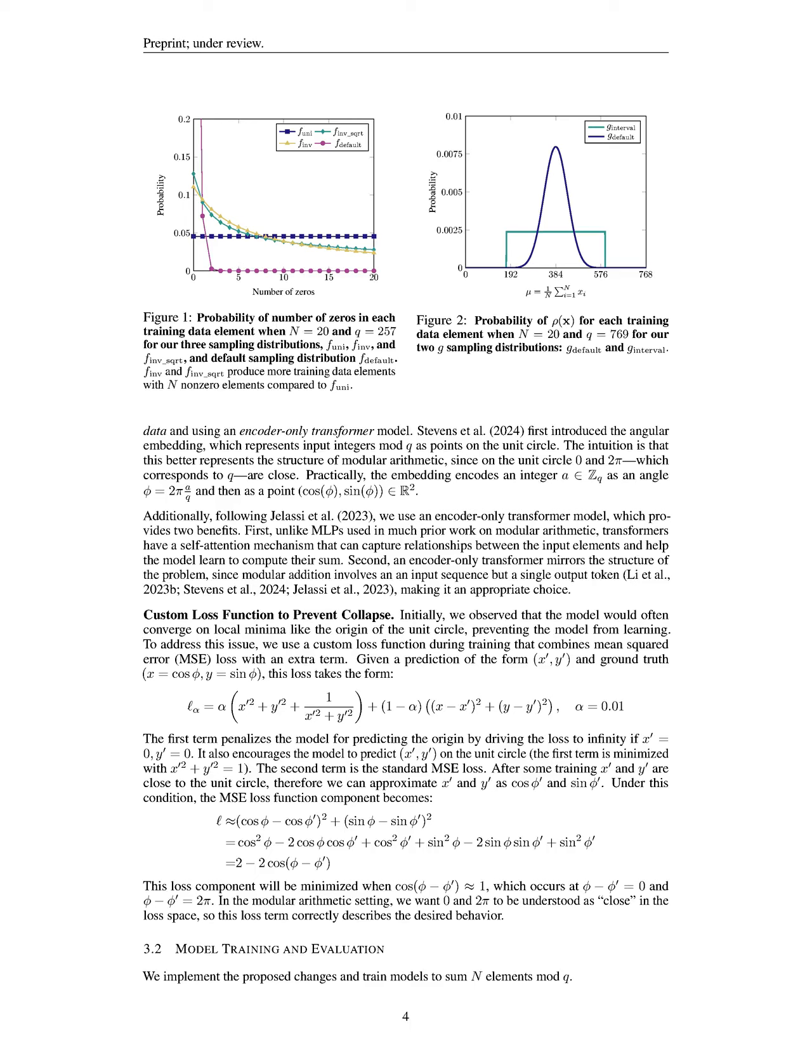Finally, we design a custom loss function that combines mean squared error (MSE) with an additional penalty term to prevent convergence at local minima, particularly the origin of the unit circle. This loss function encourages the model to predict outputs on the unit circle, aligning with the modular arithmetic requirements.